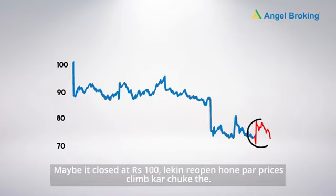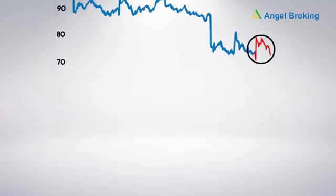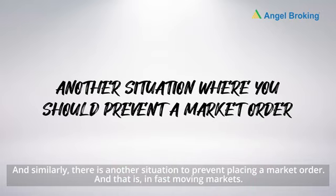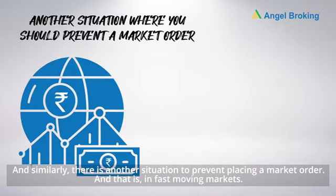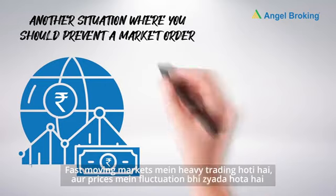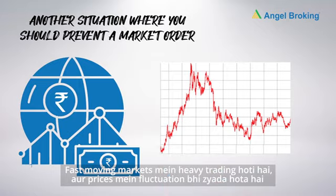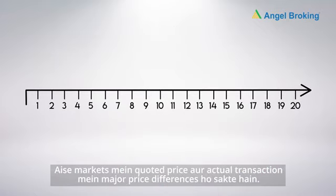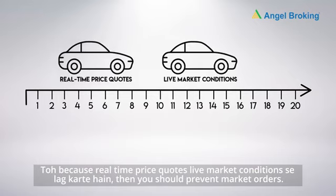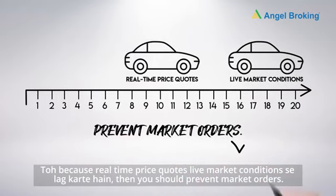Maybe the price was closer to Rs. 100, but when the market reopened, prices had already climbed. Similarly, another situation to avoid placing a market order is in fast-moving markets. Fast-moving markets have heavy trading and higher price fluctuations. In such markets, there can be major price differences between the quoted price and the actual transaction, because real-time price quotes lag behind live market conditions.